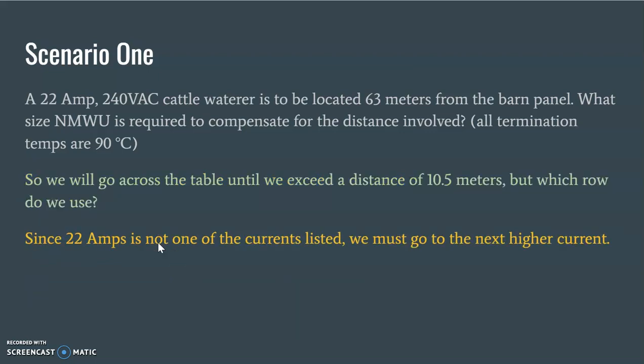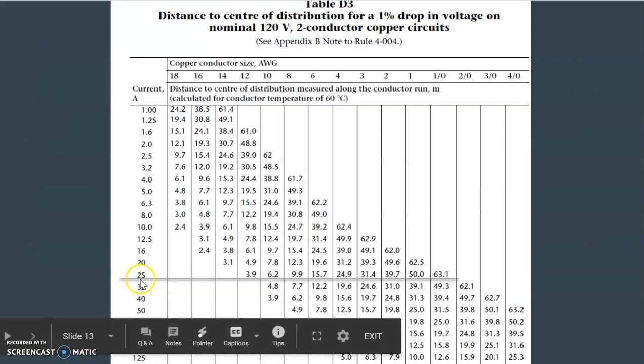So as I mentioned before, we're going to go across on a current row and try to find a distance that exceeds 10.5 meters. But which row do we use? So since 22 amps falls between 20 and 25, we don't want to go with a lower current. We actually want to go with the higher current to make sure that we're safe. So we're going to go to the next higher value, which should be our 25. And that's what we see here, 25. It's roughly underlined 25 amp row here, and we go across until we exceed 10.5. 9.9 is close, but not close enough, so we go to 15.7, and that takes us up to a number 6.